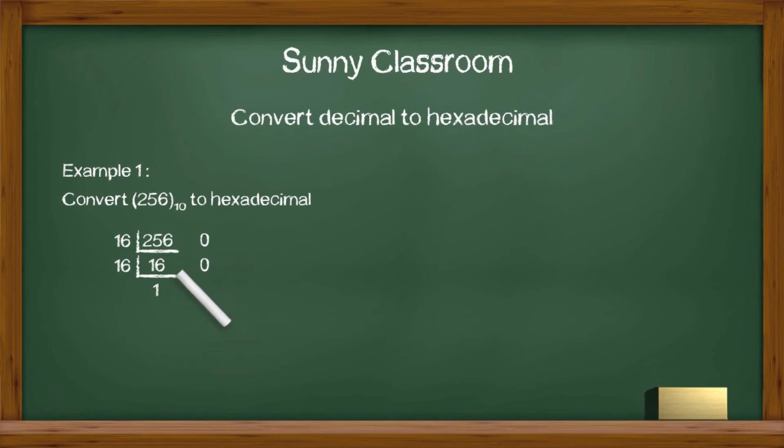Step 4. We repeat this process by dividing 1 by 16 again and we get result 0 and the remainder is 1. Once the result is 0, we stop.